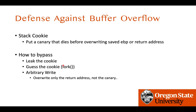Next is stack cookie. By placing a canary value near control data such as the return address and saved RBP, we can detect whether a buffer overflow has happened. However, this can be bypassed by leaking the cookie itself — if we know the cookie value, we can place it at the right position and the stack cookie check is nullified. We can also guess the cookie via side-channel attacks, such as with fork, byte by byte.